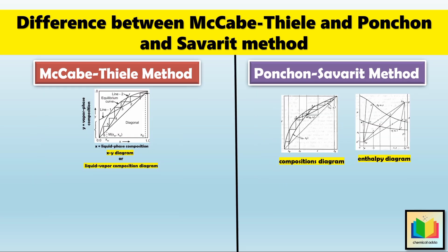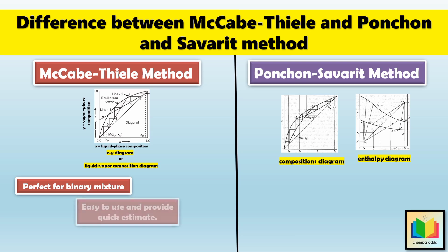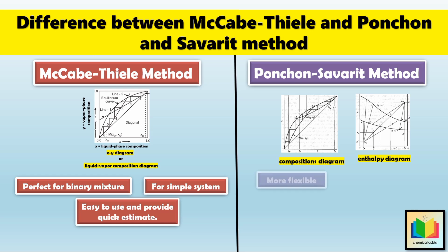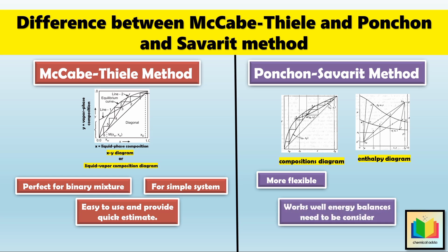In short, the McCabe-Thiele method is perfect for binary mixtures where the system behaves ideally and the separation is relatively simple — it's easy to use and provides quick estimates for the number of trays and reflux ratios. However, the Ponchon-Savarit method is more flexible and can handle multi-component mixtures and non-ideal systems, working well when energy balances need to be considered. So if you're dealing with a simple system, the McCabe-Thiele method is the way to go, but for complex systems, the Ponchon-Savarit method will give you a more accurate and comprehensive result.